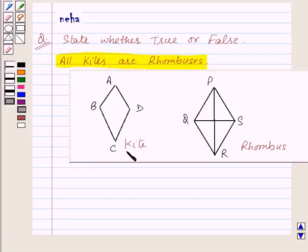So here we have a kite and a rhombus. First of all, let's recall what is a rhombus. A rhombus is a parallelogram with sides of equal length. That is PQ is equal to QR is equal to RS is equal to SP.